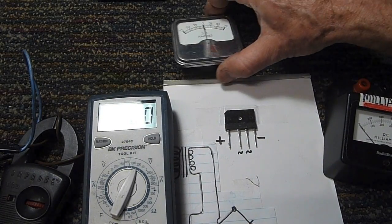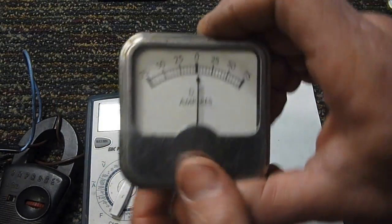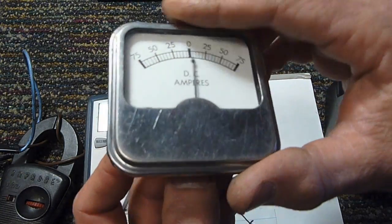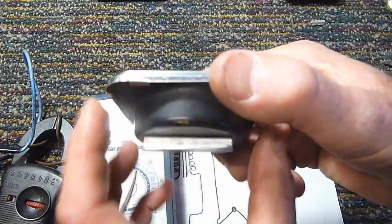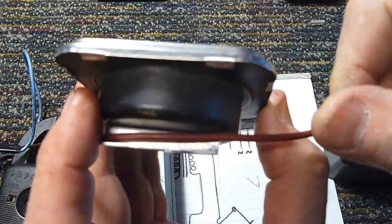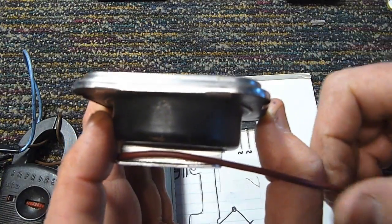Now there are lots of different types of ammeters. This particular one is something that automotive troubleshooters often use. It doesn't even have an electrical input on it. It's just got this channel here that you lay your wire inside, and this measures the magnetic field strength coming off the wire.